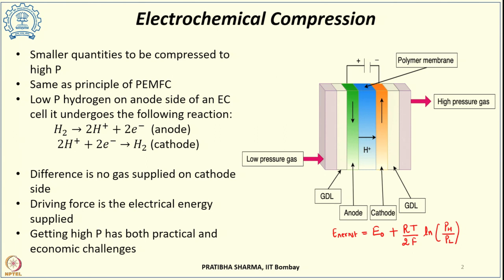We can achieve higher pressure from electrochemical compressors by cascading several single-stage electrochemical cells. A multi-stage electrochemical cell consisting of several cascaded cells can produce higher pressures — demonstrated values of 87.5 MPa or even 100 MPa have been reported. Operating at lower pressure with a lower flow rate and lower voltage yields very high efficiency, as high as 90 percent.